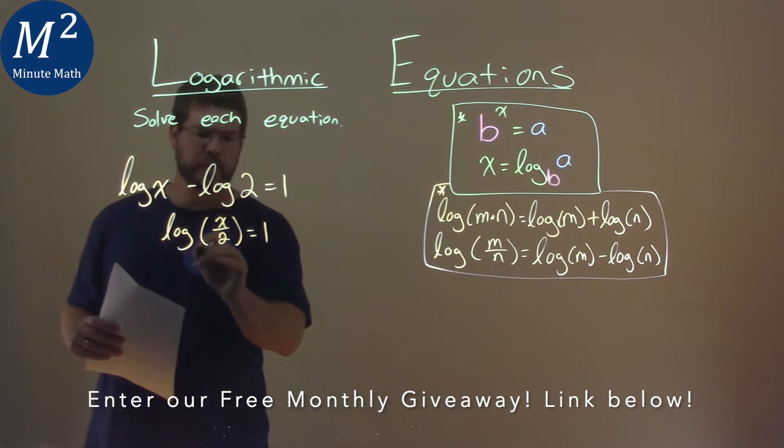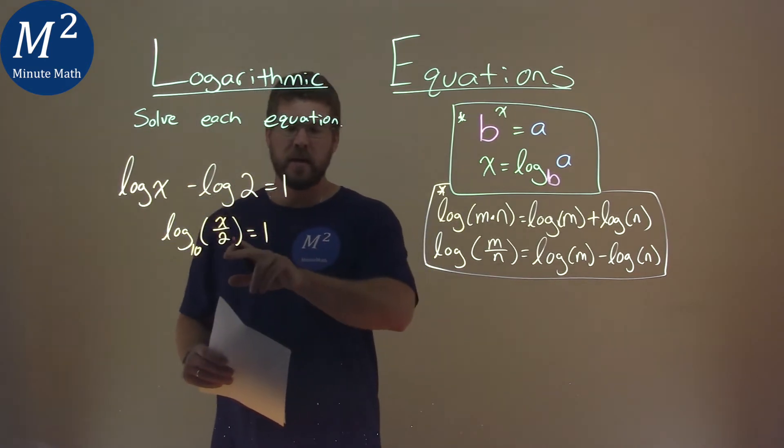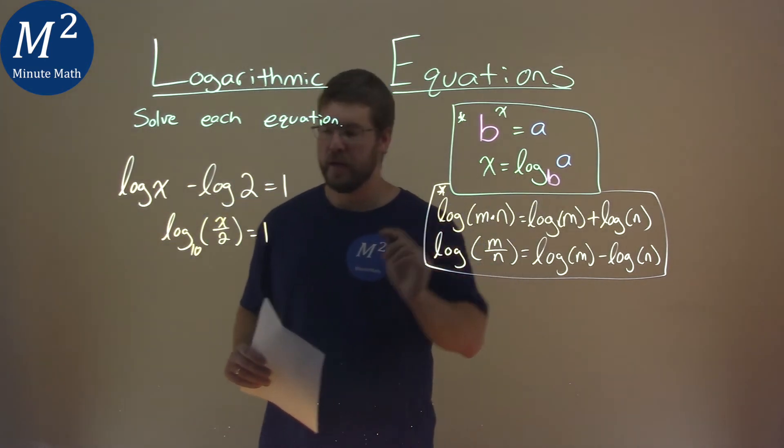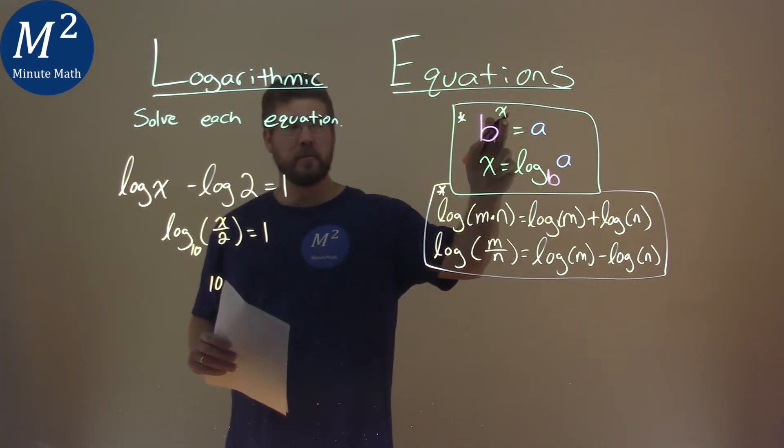From there, what I said was this is a log base 10. When it's not written, it's going to be a 10. We now use our formula here. Our base 10, our b value, is going to be raised to what it's equal to, and that's just the 1.